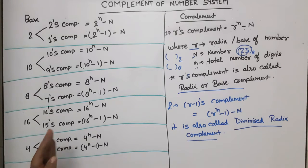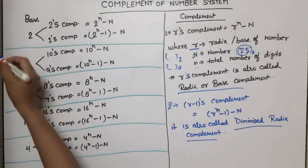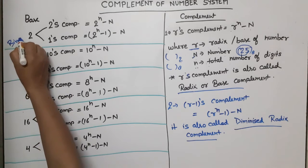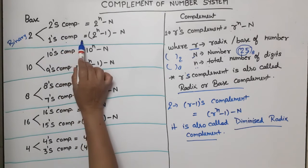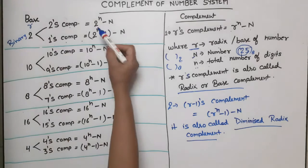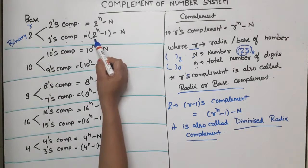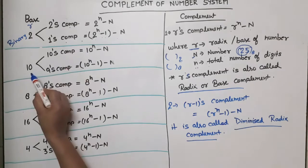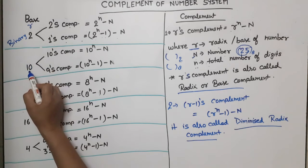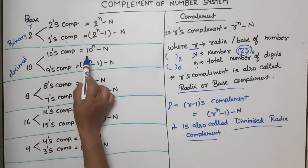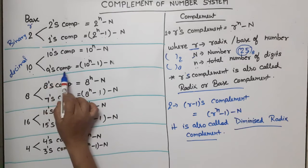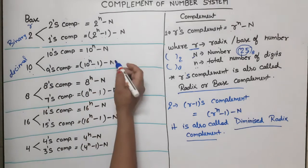I have written these formulas — note them down. For binary (base 2): 2's complement = 2^n − N, and 1's complement = 2^n−1 − N. For decimal (base 10): 10's complement = 10^n − N, and 9's complement = 10^n−1 − N.